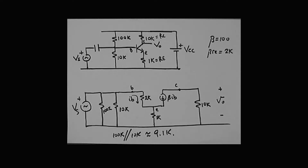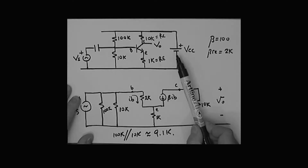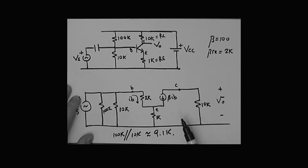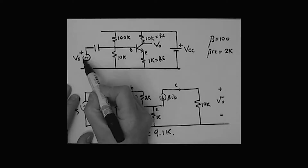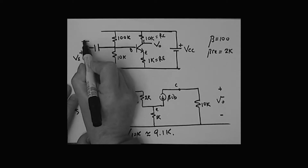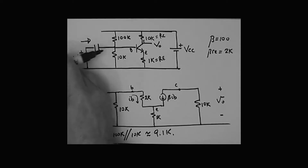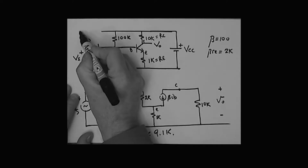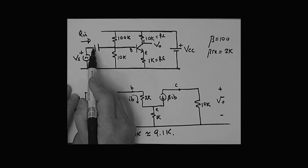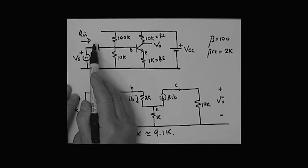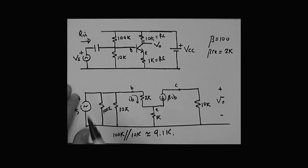Going back to the example we've just recently considered, we were able to determine the voltage gain of this amplifier. I want to ask the same basic question in relation to input resistance. Here's my signal source - what is the resistance that signal source sees as we look into the input of this amplifier? I'll call that R_in - it's an AC input resistance, not DC. It's the resistance that my AC signal source sees at the input terminal of the amplifier.